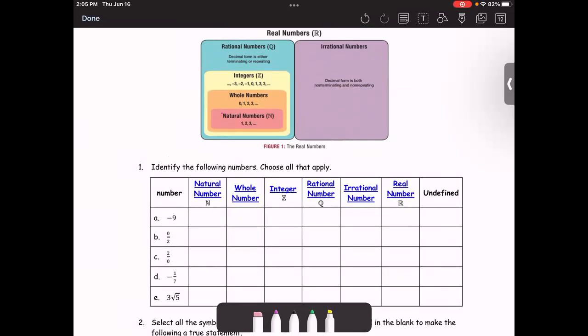Let's categorize them using the diagram in Figure 1. As you see, the set of real numbers consists of rational number and irrational number. Rational number is a number that can be written in the decimal form, either terminating or repeating. And also that has a subset as the integers, whole numbers, and natural numbers.